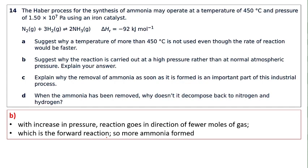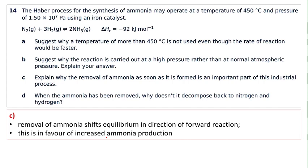Part (b): Why is high pressure used rather than atmospheric pressure? The reactant side has 4 moles (1 N₂ + 3 H₂) and the product side has 2 moles of NH₃. Increasing pressure shifts equilibrium toward fewer moles — the product side. So high pressure favors the forward reaction and increases ammonia yield.